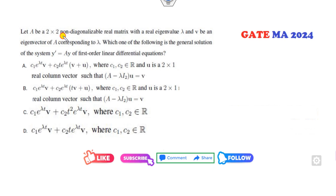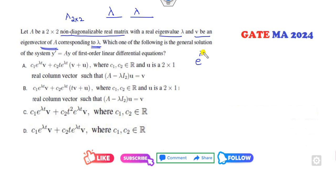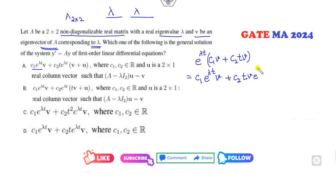Next: A is a non-diagonalizable real matrix with a real eigenvalue. Since A is 2×2 and non-diagonalizable, it has repeated eigenvalues. If v is the eigenvector corresponding to λ, the solution of the system is: c1·v·e^(λt) + c2·(tv·e^(λt) + ...). Expanding this, terms like t² would appear — so that option is cancelled.